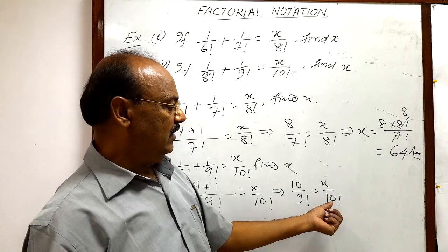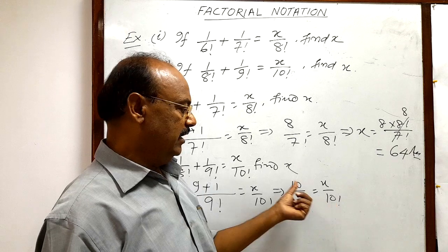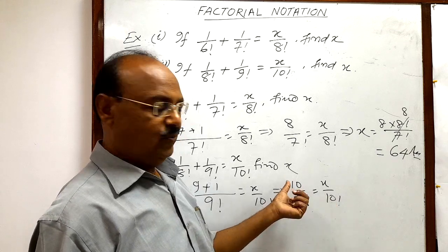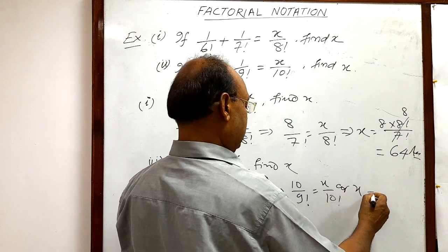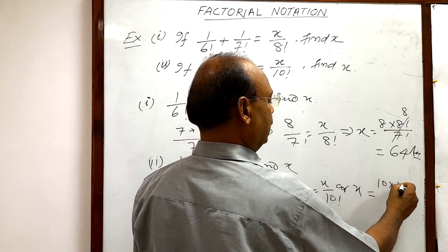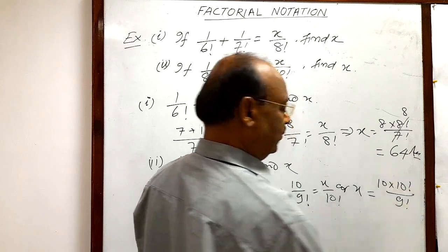After transposition, whenever this 10 factorial will be shifted left hand side, it will come in numerator. So we can write or x is equal to 10 into 10 factorial divided by 9 factorial.